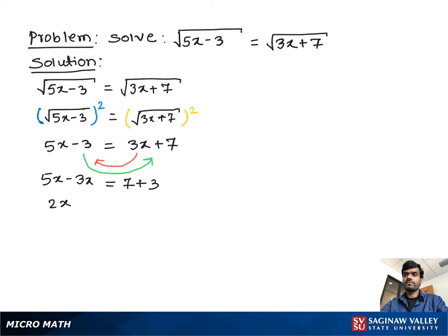Now 5x minus 3x equals 2x, and 7 plus 3 equals 10. So we have 2x equals 10. Divide both sides by 2 — the 2 cancels out — giving x equals 10 divided by 2, which is 5. So x equals 5.